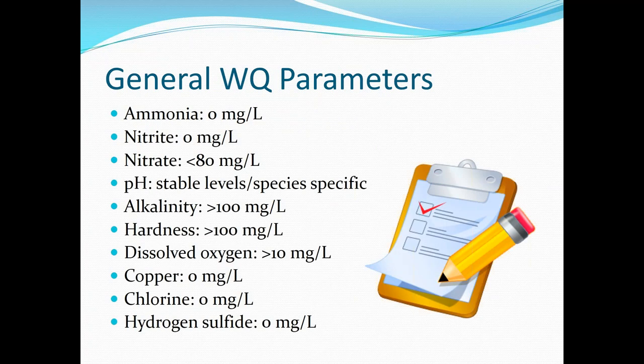This is your general water quality parameters slide — available on that first handout, the five tips to healthy fish. This is just a very general parameter list; for some species of fish, it's going to be a lot more specific as far as nitrate and pH. Some people recommend that alkalinity only be 50; however, in very heavily stocked systems, we have seen problems with only 50 milligrams per liter, so we recommend 100.